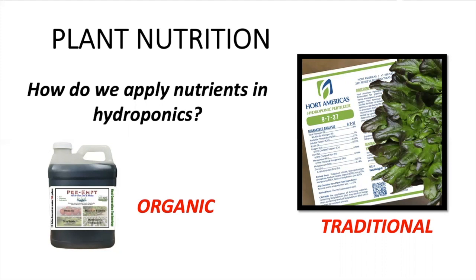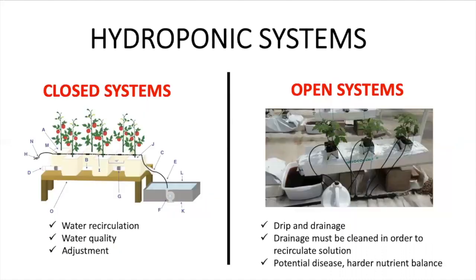In order to understand how to provide nutrients and maintain nutrition in a hydroponic system, we first need to learn that there are a lot of hydroponic systems, but we can group them all in two categories: closed systems and open systems. Closed systems are systems where water or nutrient solution is recirculated. We can continue to use the same water by providing the correct management. Water quality for this system is pretty important, as well as the continued adjustment of nutrients and pH in order to provide the best nutrition to our plants.